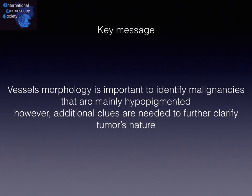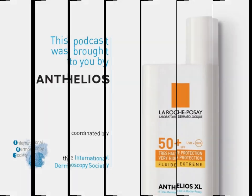To conclude, the key message is that vessel morphology is important to identify malignancies that are mainly hypopigmented, in which we have very few clues. However, additional dermoscopic and clinical clues are needed to further clarify the tumor's nature. Thank you.